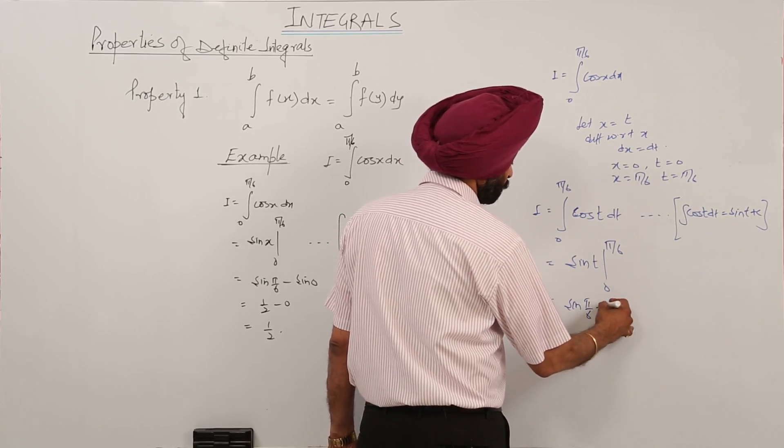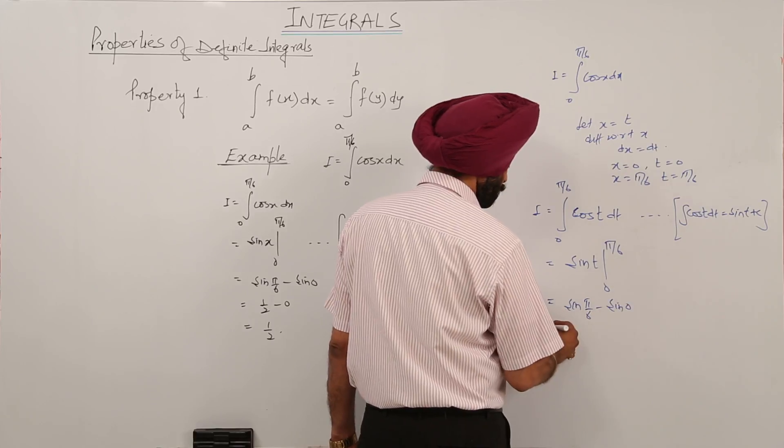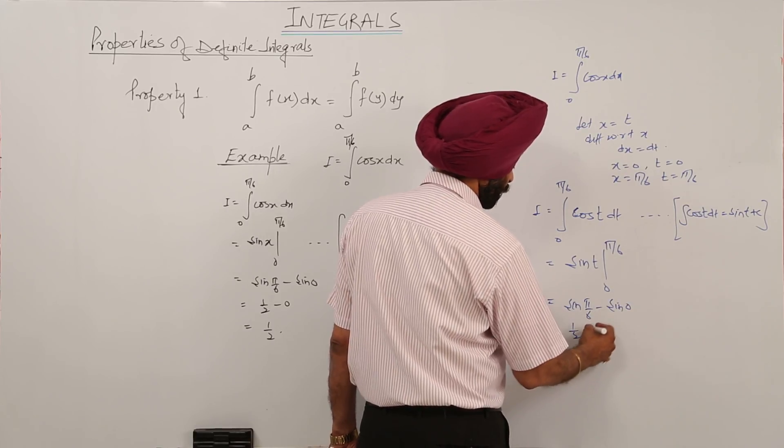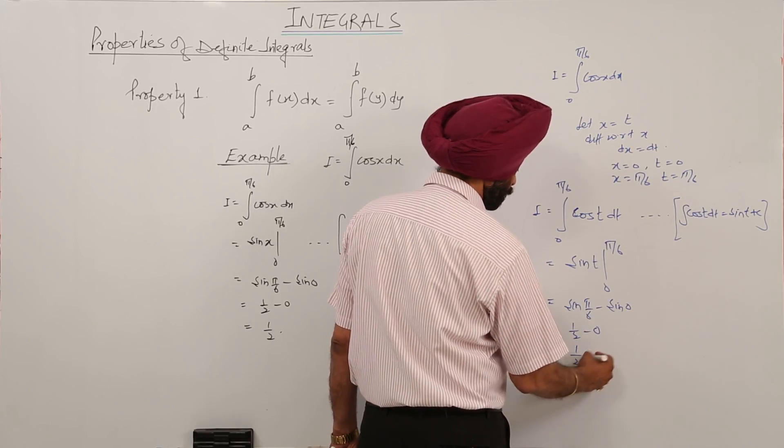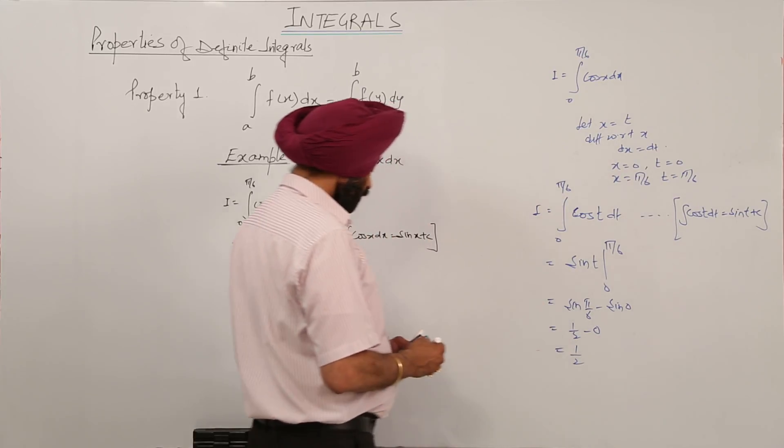Sin pi by 6 minus sin 0. This is equal to 1 by 2 minus 0 is equal to 1 by 2. So both the sides.